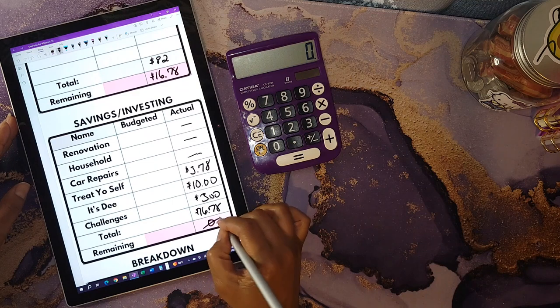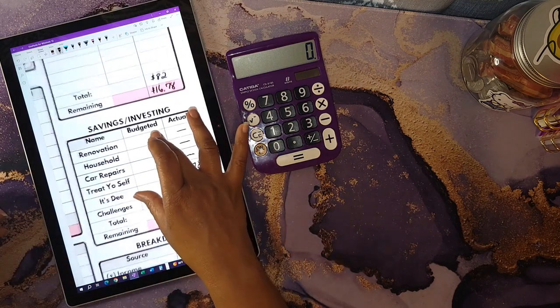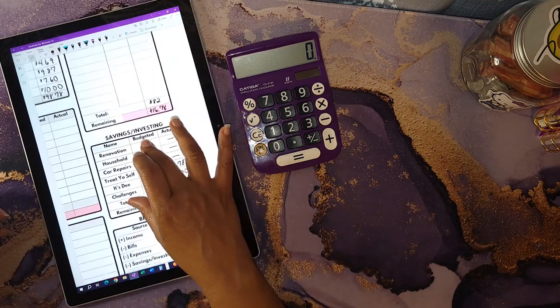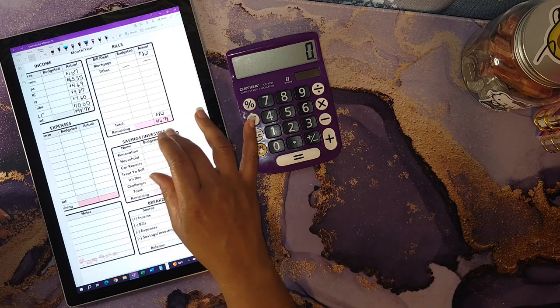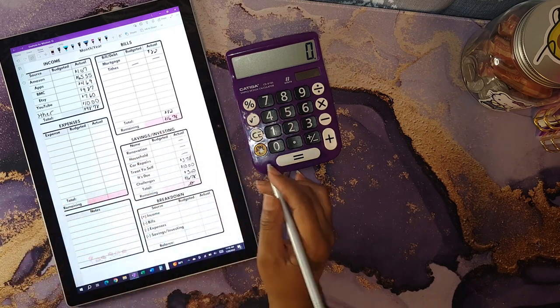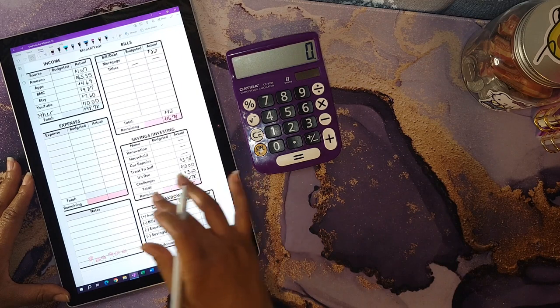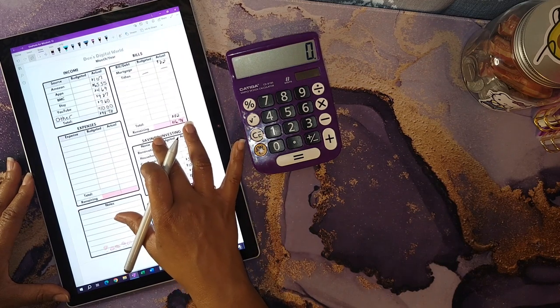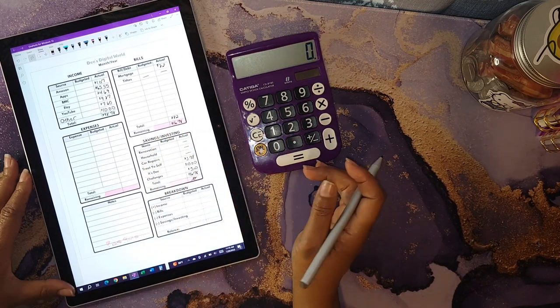That is a total of zero dollars remaining. I do a zero-based budget. This is the way that I prefer to budget. I like to make sure that all of my income has a place and has a job.